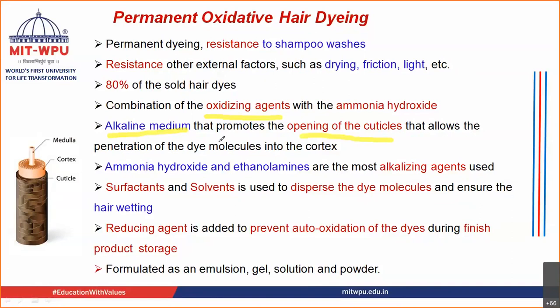The alkaline medium also promotes the opening of the cuticle — as we talked about in the semi-permanent system, an alkaline or basic environment causes the swelling of the cuticle, and as the swelling takes place, there is opening which allows the dye molecule to penetrate into the cortex and form a bond with the cortex. Ammonia has been shown to have hazardous effects, and hence nowadays non-ammonia containing hair dyes are basically preferred. But ammonia is a very good alkaline medium and was used for a very long period of time.